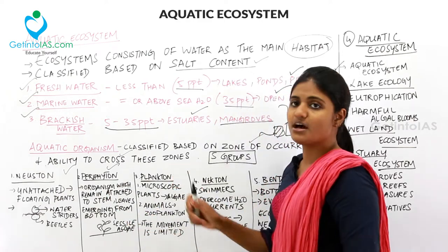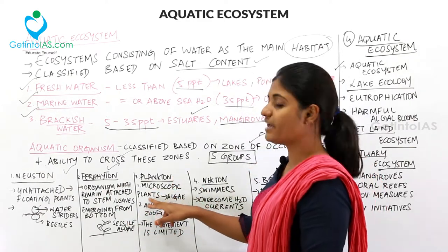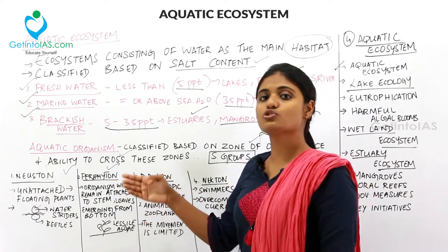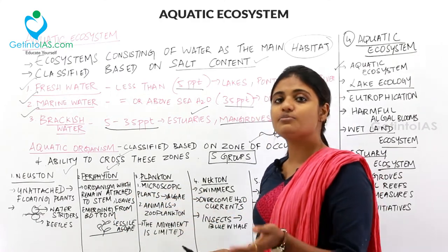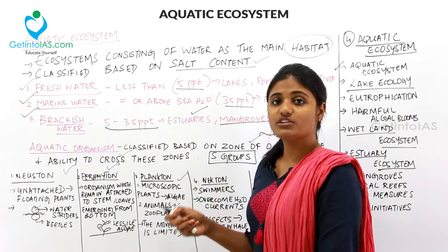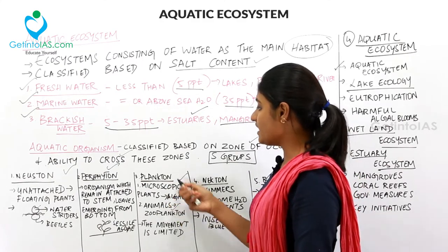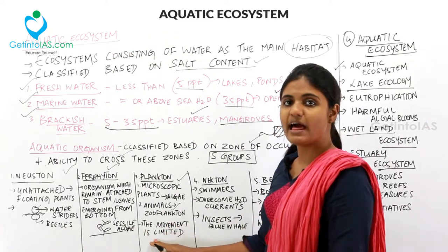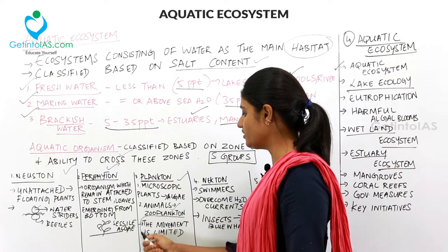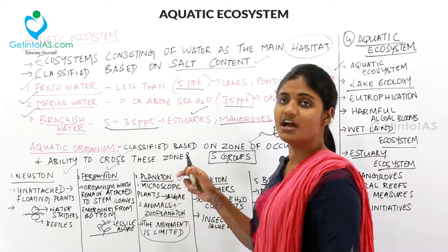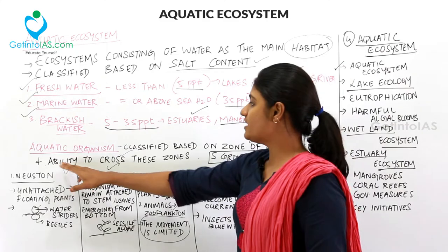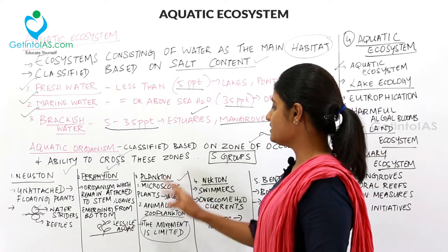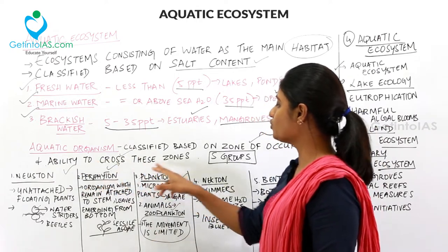Plankton are of two types: microscopic plants and animals. An example of plant plankton is algae, and an example of animal plankton is zooplankton. The microscopic plants and animals constitute the plankton inside the aquatic system. Importantly, the movement of plankton is limited — their ability to cross zones is restricted.